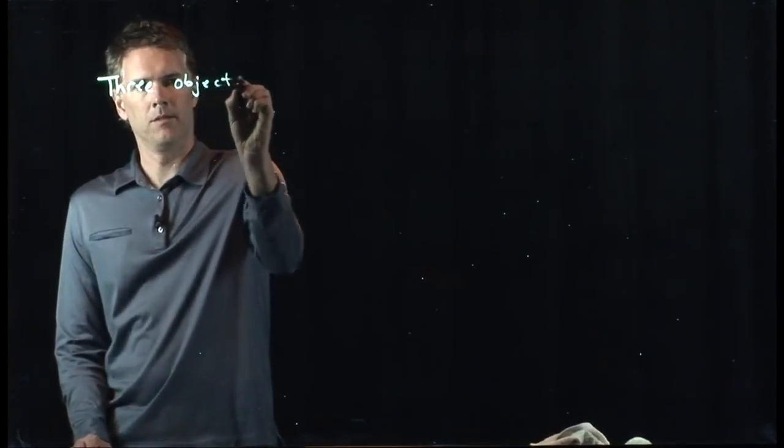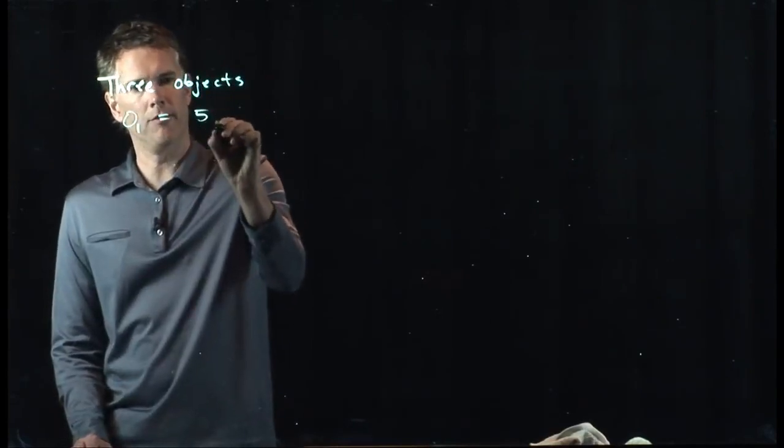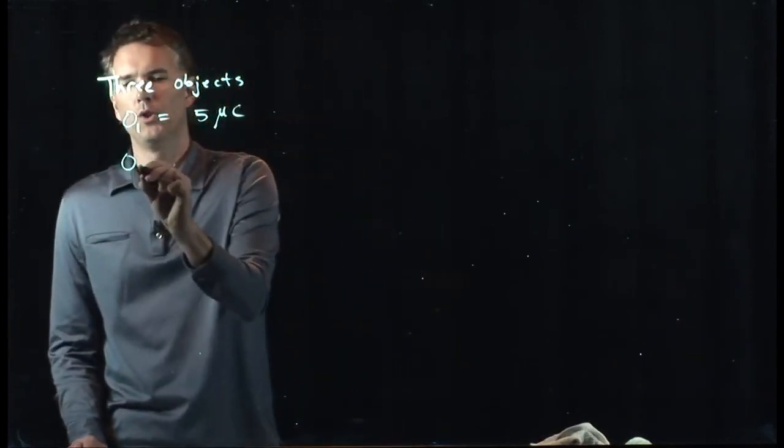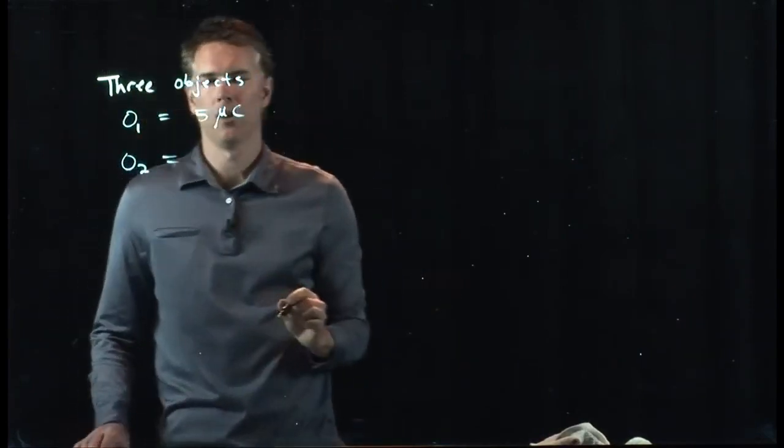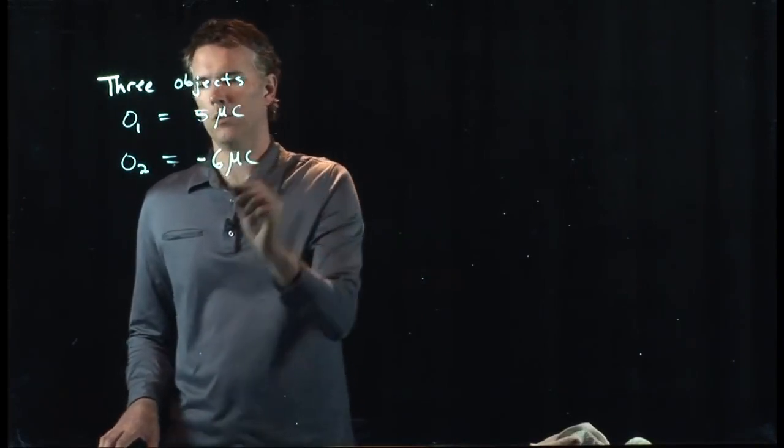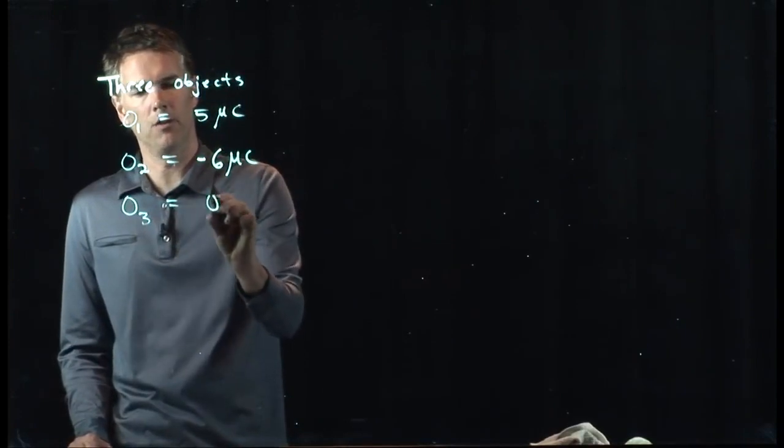So let's say we have the following. We have three objects. O1 has a charge of 5 microcoulombs. O2 has a charge of minus 6 microcoulombs. Object 3 has a charge of 0.